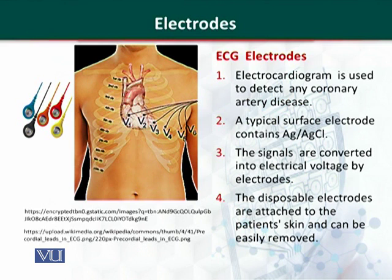ECG electrodes are used for the diagnosis of coronary heart disease. These electrodes are disposable and are stuck onto the patient's skin at specific positions. ECG electrodes are connected to a recorder, all recordings are taken, and after recording, an ECG graph is plotted. These disposable electrodes can be easily stuck on and removed from the patient's skin.